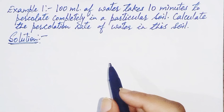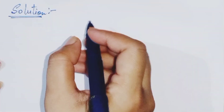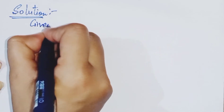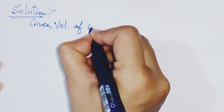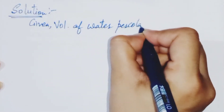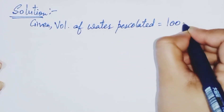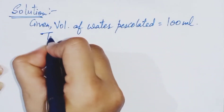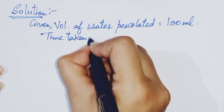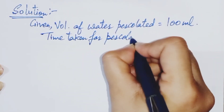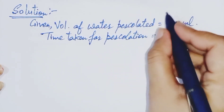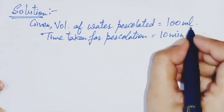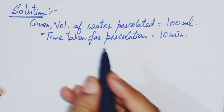100 ml of water takes 10 minutes to percolate completely in a particular soil. Calculate the percolation rate of water in this soil. Solution: given, volume of water percolated is equal to 100 ml, and time taken for percolation is equal to 10 minutes.